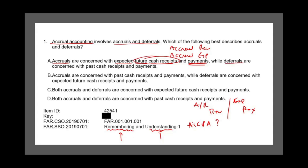Deferrals are concerned with past cash receipts and payments. We have two types: deferred expenses (prepaid expenses) and deferred revenue (unearned revenue). Both deal with past cash. For prepaid expenses, you paid in the past — debit prepaid, credit cash. For unearned revenue, you debited cash and credited unearned revenue. So Answer A looks like a good answer — I will go with A.